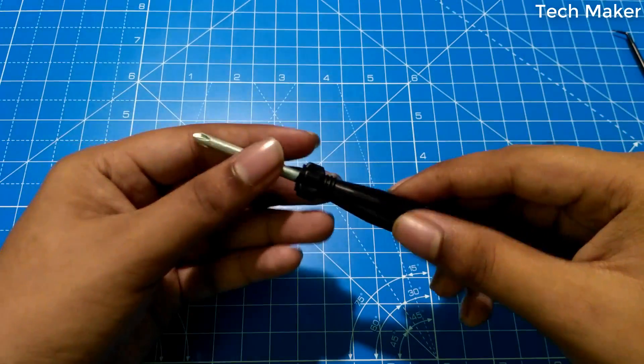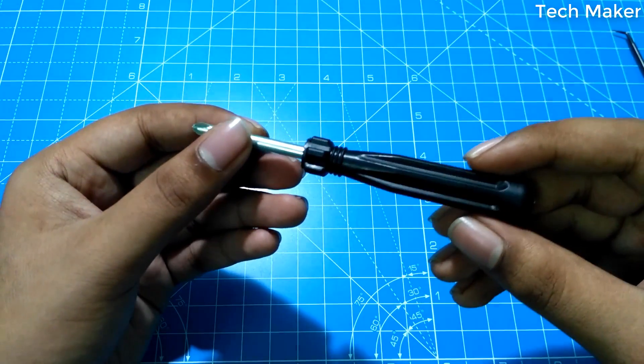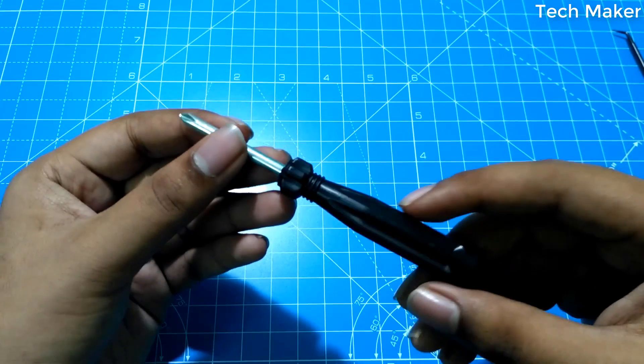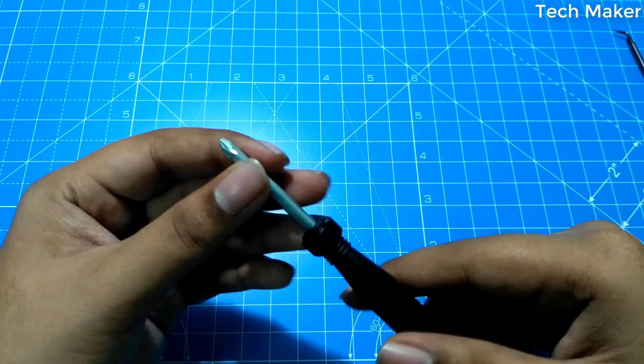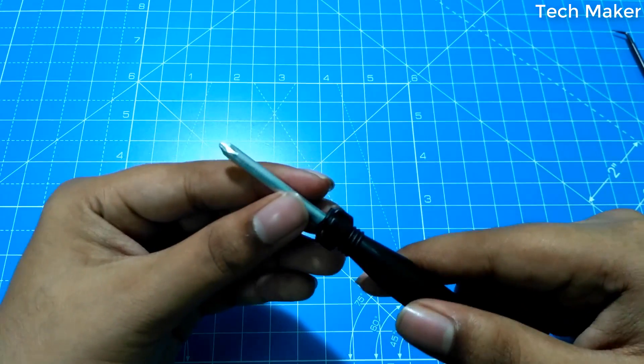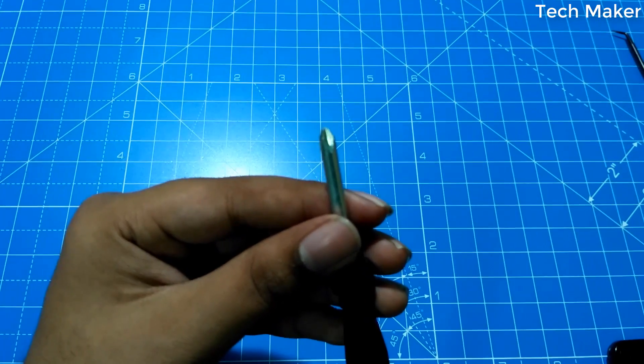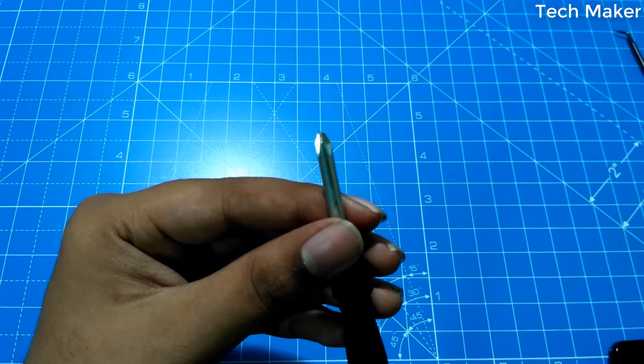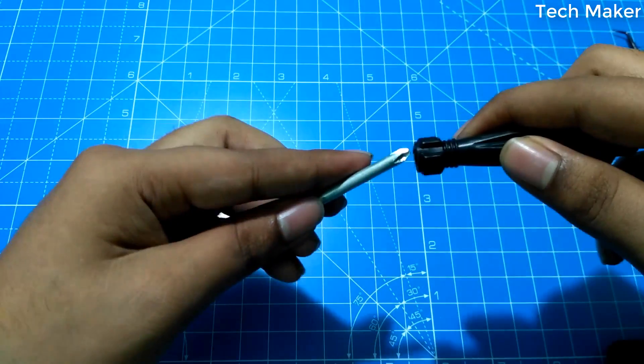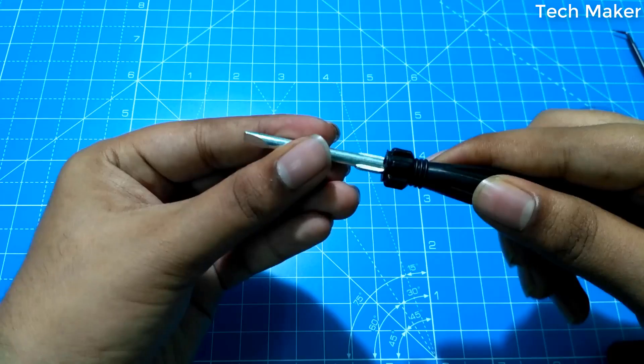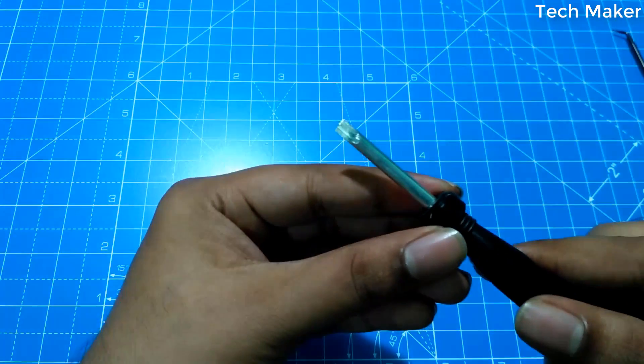And you will get this double-headed screwdriver, which is very hard. And you can see, this is one side of the point. And you can change like this also. A normal screwdriver.